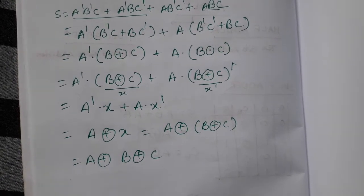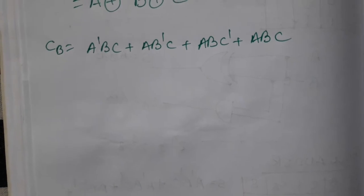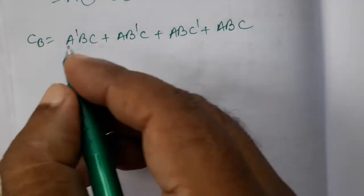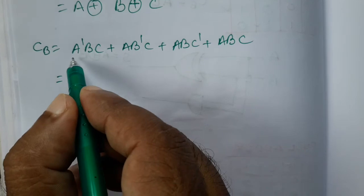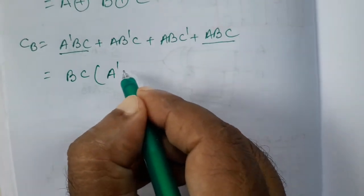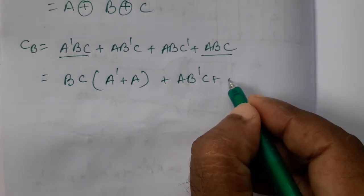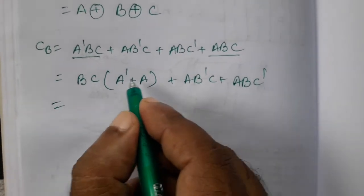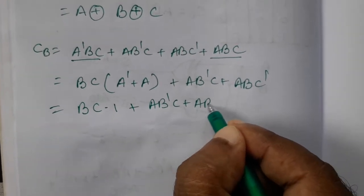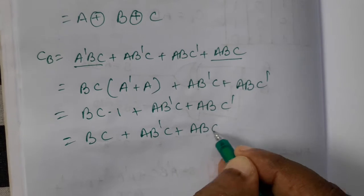Now we will find the carry. The carry expression is A'BC + AB'C + ABC' + ABC. We will minimize it. Taking this two terms and this two terms: BC is common in first and last, giving BC(A' + A) plus AB'C plus ABC'. Since A' + A is 1, we get BC plus AB'C plus ABC'. Then taking A common from the last two: BC + A(B'C + BC').